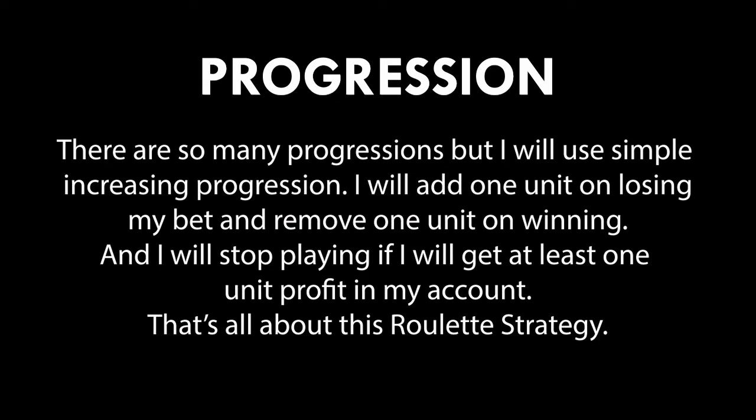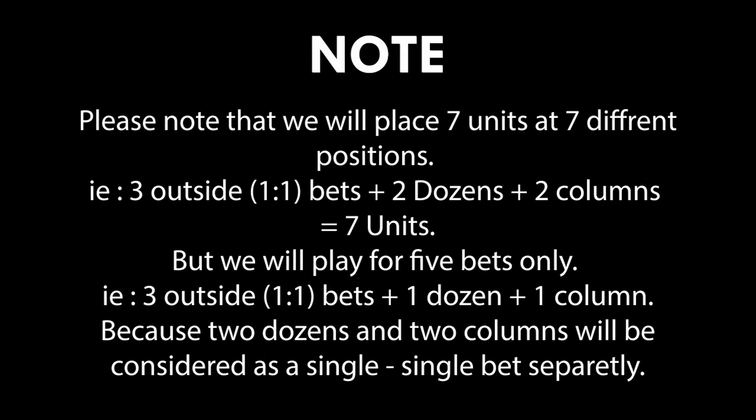There are many progressions but I will use a simple increasing progression: add one unit on a losing bet and remove one unit on winning. I will stop playing if I get at least one unit profit in my account. Note that we play seven units at seven different positions — three outside one-to-one bets, plus two dozens, plus two columns — but in reality we are playing five bets only, because two dozens and two columns are each considered as a single bet separately.